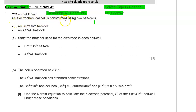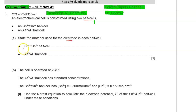An electrochemical cell is constructed using two half cells. One half cell is for tin ions — tin in oxidation state +4 and oxidation state +2. The other half cell is for aluminium and its ions. State the material used for the electrode in each one of these cells. For the tin cell, which is composed of a mixture of ions — tin in oxidation state +4 and tin in oxidation state +2 — the electrode suitable for use is platinum.